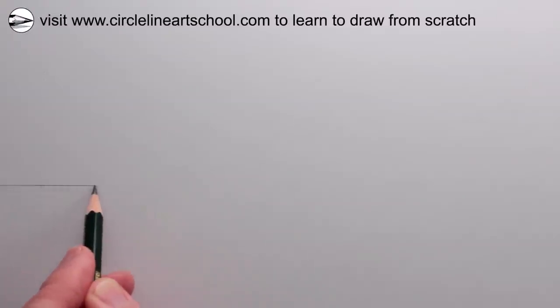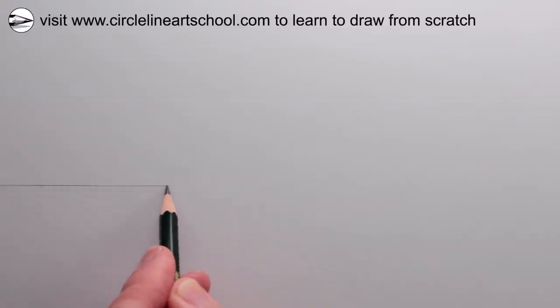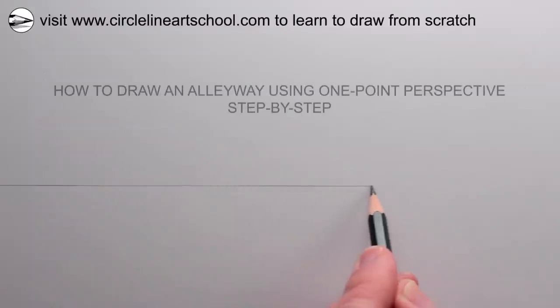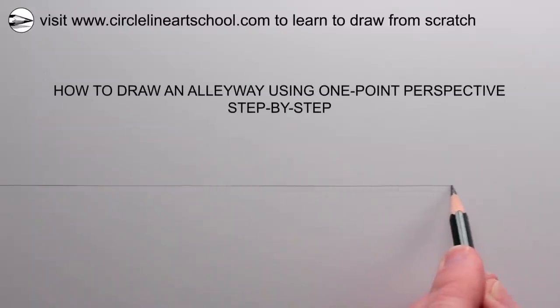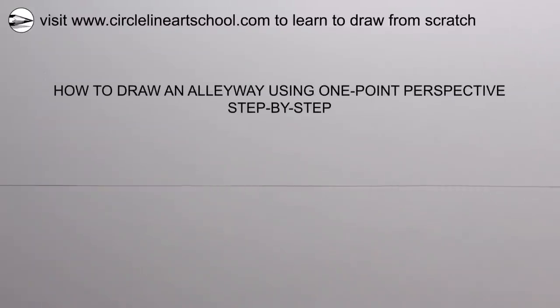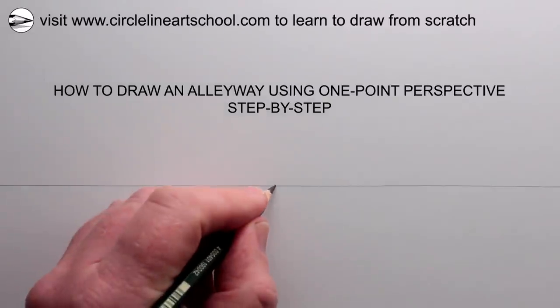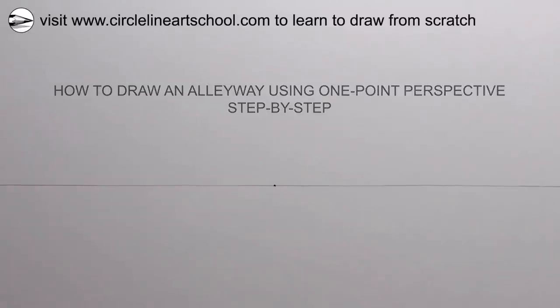Hi, Tom here. In this week's Circle Line Art School video, I'll show you one way to draw an alleyway using one point perspective. Start by drawing a horizontal line across your page and then a vanishing point in the center of the horizon line.